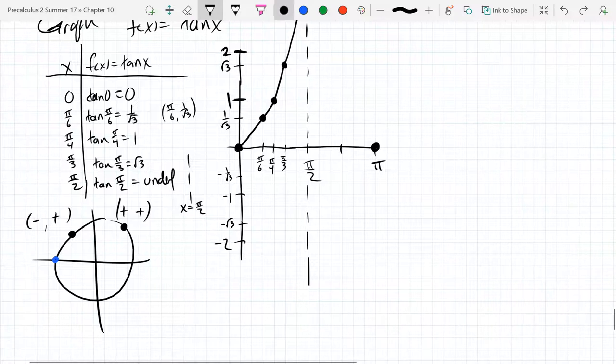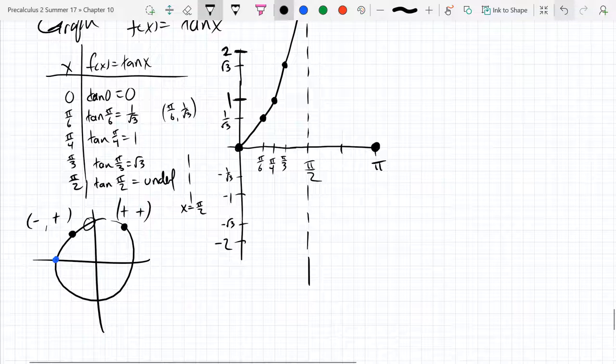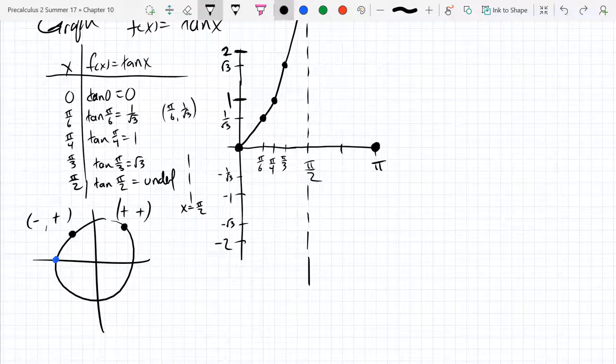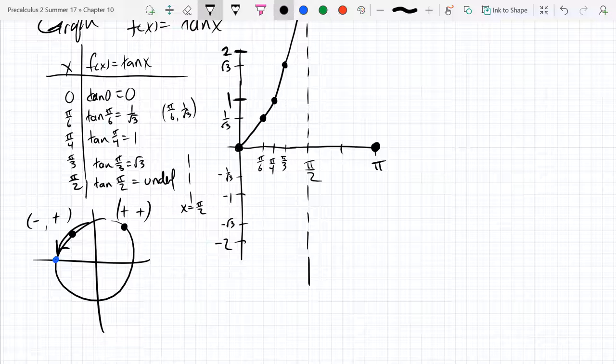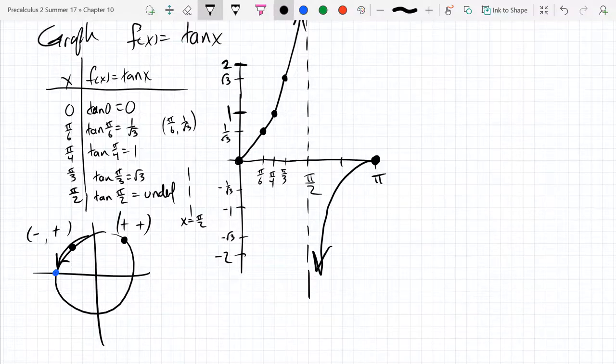And we start at, well, I could say negative undefined right here, but a huge negative number. And then we slowly, as we go down, the x-coordinate, not the x-coordinate, the tangent value goes back to zero. So the curve looks like that right there.